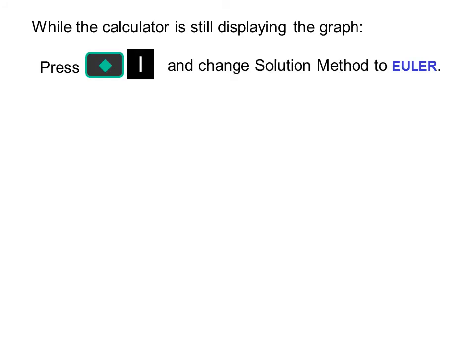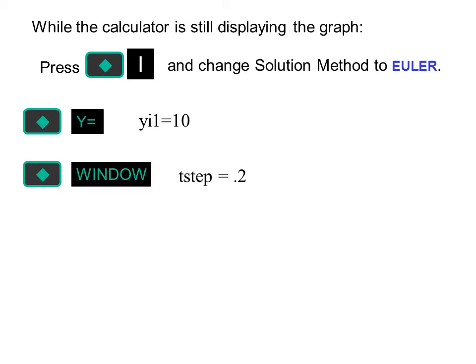While the calculator is still displaying the graph, press diamond and the vertical bar and change the solution method to Euler. Press diamond y equals and set the initial value yi1 equals 10. Then diamond window, make t-step 0.2. You may already have these set.